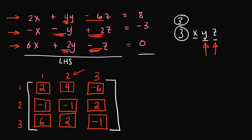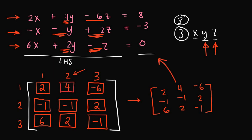We've figured out what our coefficient matrix is. Rewriting it cleanly: 2, negative 1, 6 in the first row; 4, negative 1, 2 in the second row; negative 6, 2, negative 1 in the third row. That's our coefficient matrix for this system of linear equations.